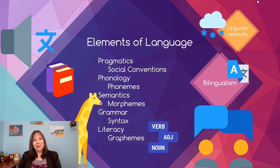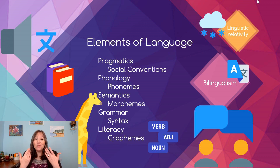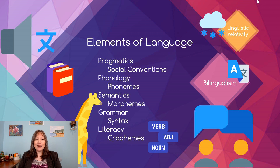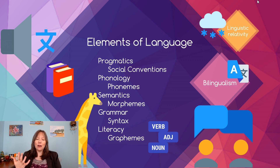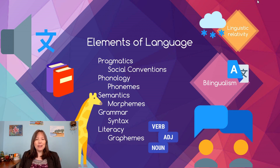Now let's switch over and talk about human language. Aside from animals, what do we know about human languages? We know that human languages tend to have five main components that we tend to study in the science of linguistics. I'm not a linguist and I greatly appreciate the work that linguists do because it's very complex science.